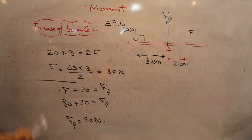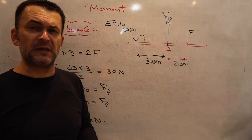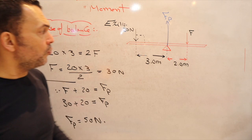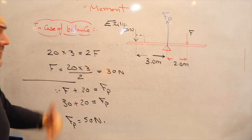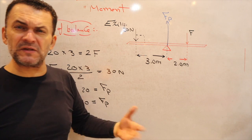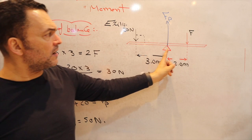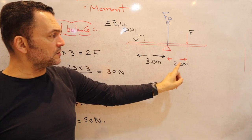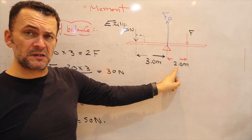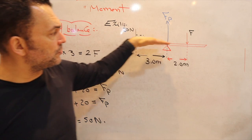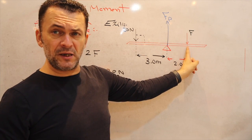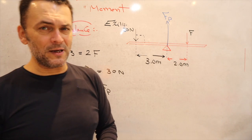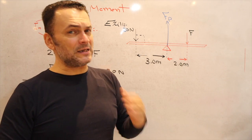This is how most past paper questions on this topic work. Sometimes the questions have different variations — instead of asking about the force, they may ask about the distance, or describe a meter rule and ask you to find a specific reading or mark. We will see those in past paper examples. Thank you for watching. See you next class.